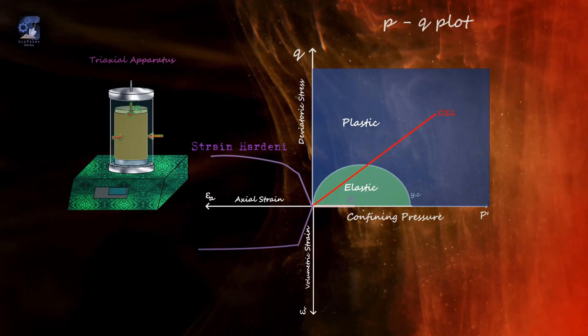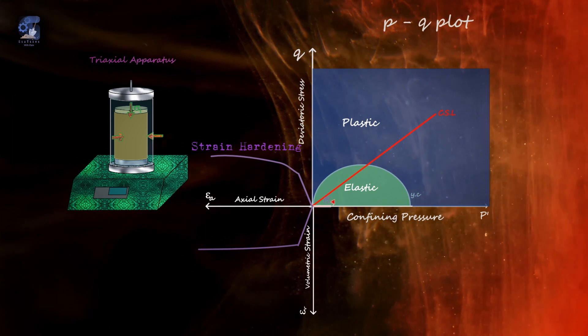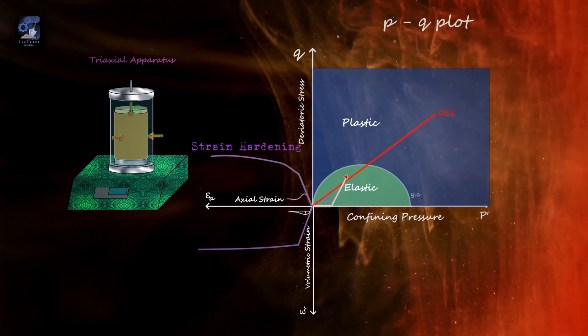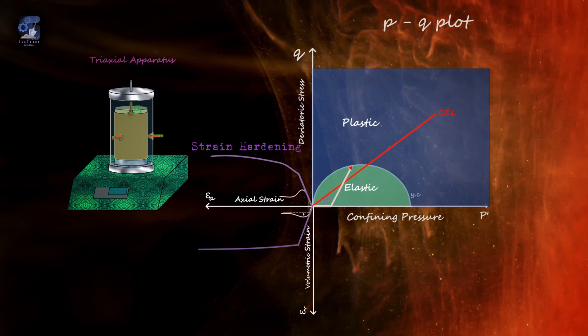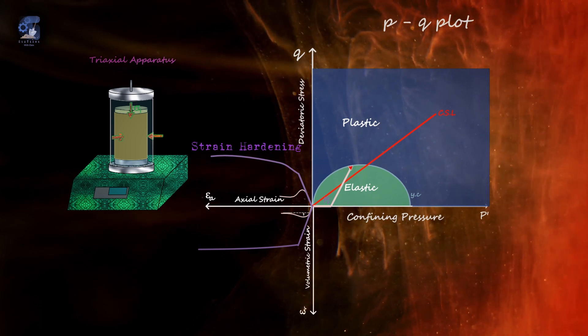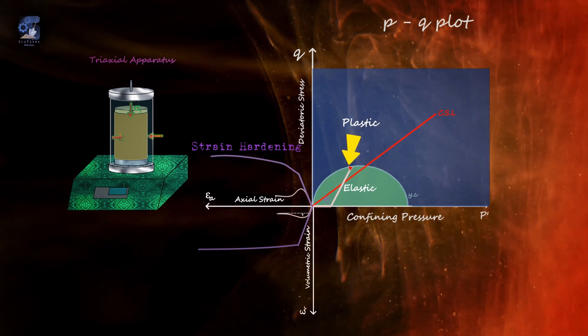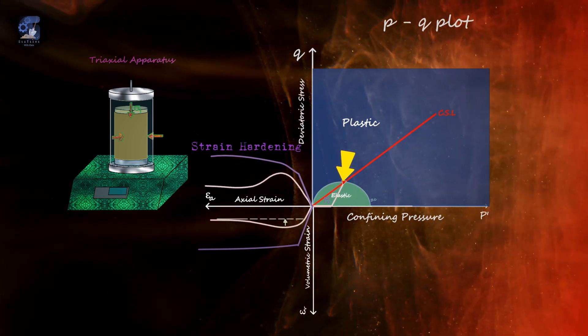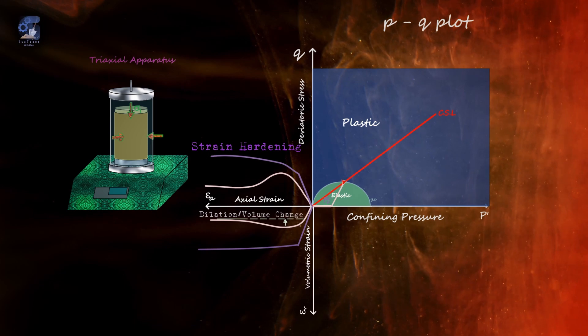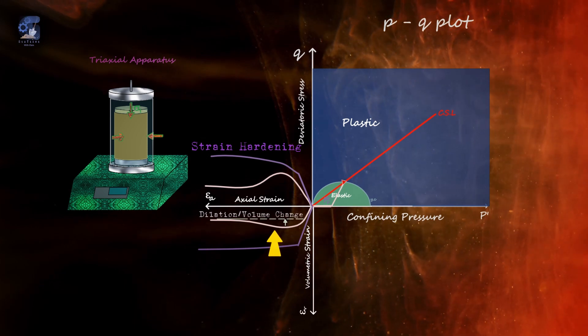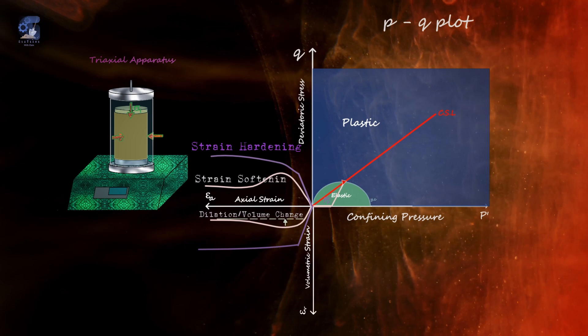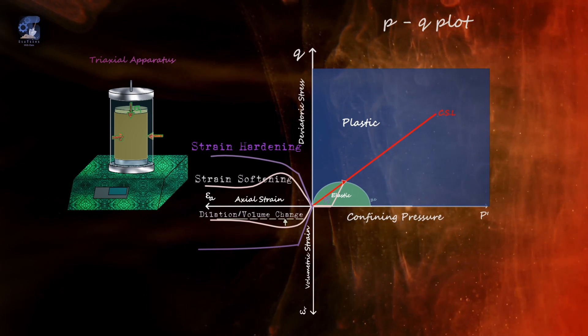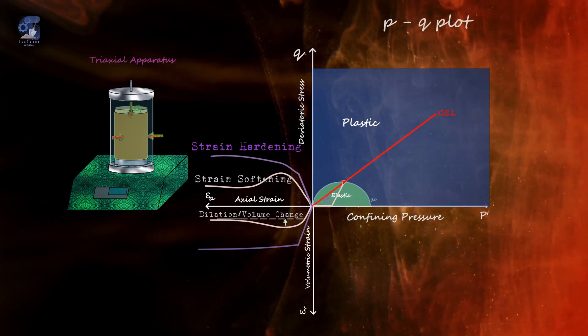On the flip side, when shearing the soil sample at low initial confining pressure, a different strain deformation regime can be observed. After the stress path has reached the yield surface, it reverses and moves down towards the critical state line, at which the sample will show signs of dilation or volume increase and failure. The yield curve will also shrink. This is called the strain softening behavior of soil.